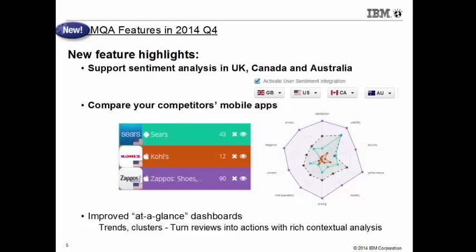Let's get to the new client value features. One of the first things we can announce is that we have already extended user sentiment analysis to the U.K., Canada, and Australian app stores. App stores are not necessarily just global — they're actually per region, so there are app stores in the U.K., U.S., Canada, and Australia. These are all English-language app stores, and the sentiment analysis now has capabilities to work at those app stores in English for those new properties.